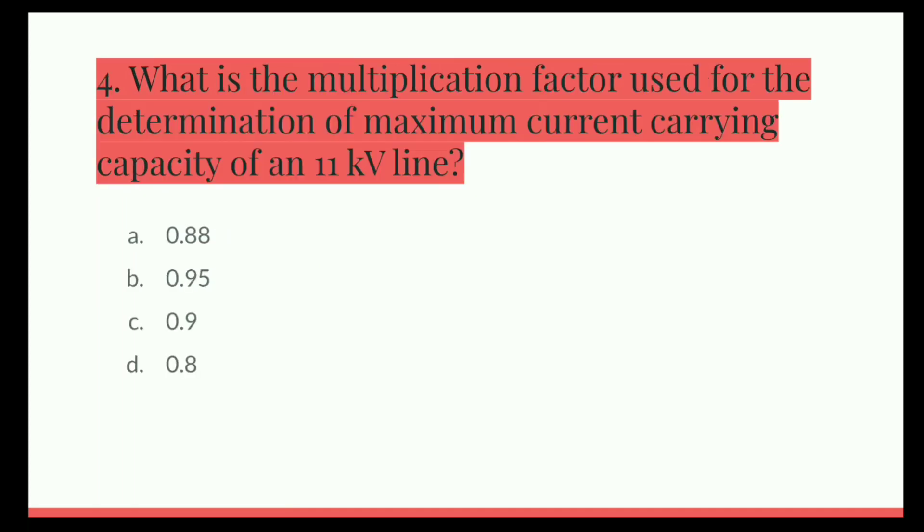Next question. What is the multiplication factor used for the determination of maximum current carrying capacity of an 11 kV line? Option A, 0.88. B is 0.95. C is 0.9. D is 0.8.